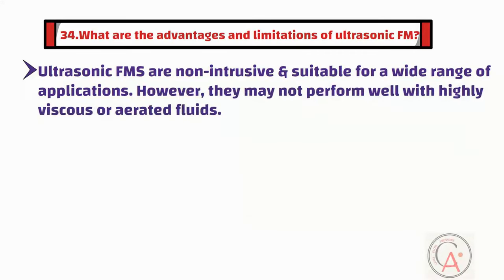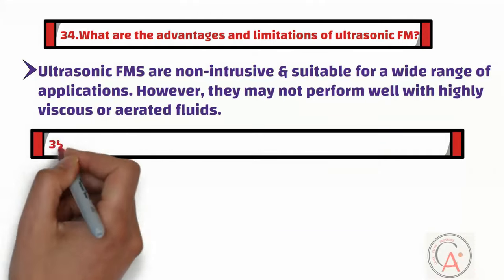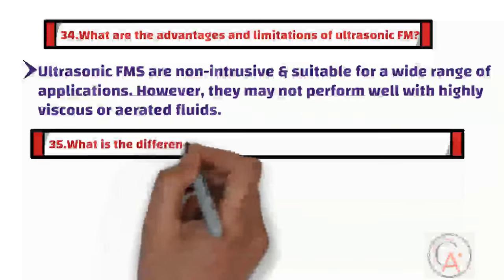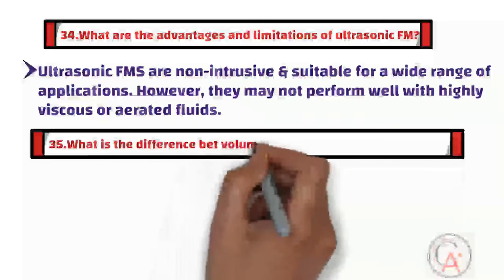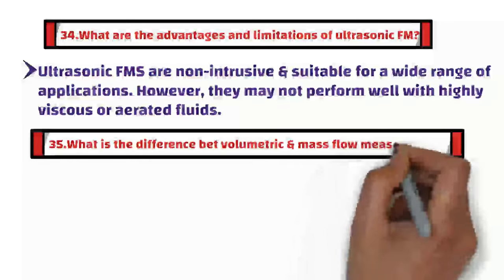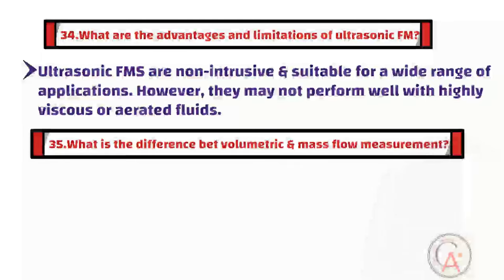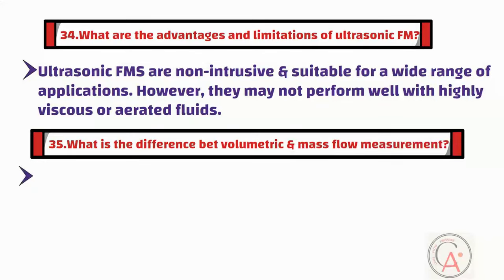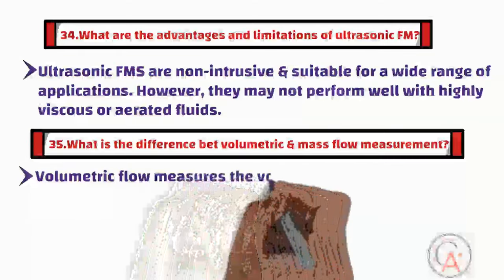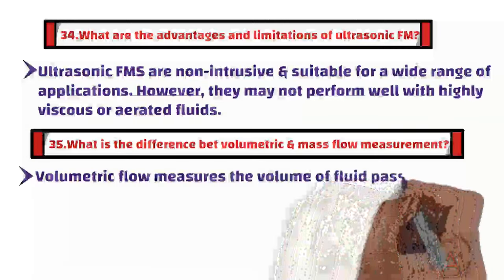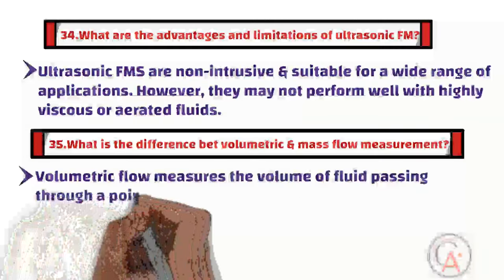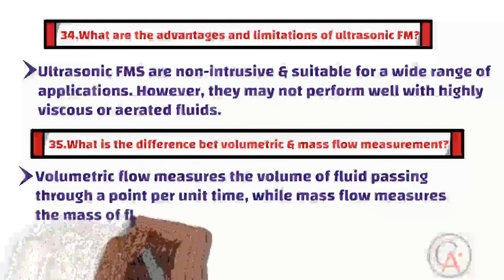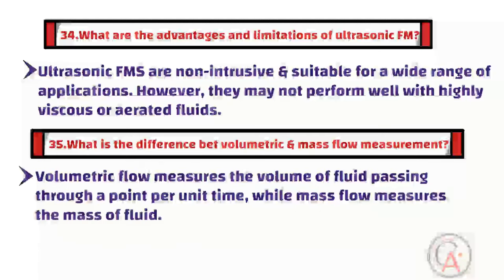The thirty-fifth question is: what is the difference between volumetric and mass flow measurement? Volumetric flow measures the volume of fluid passing through a point per unit of time, while mass flow measures the mass of fluid. Mass flow is often preferred because it is less affected by changes in temperature and pressure.